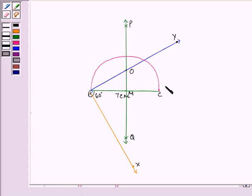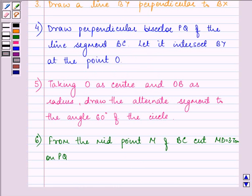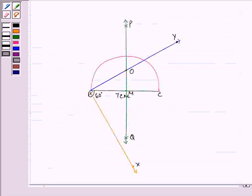Now from the midpoint M of BC, cut MN 3.7 cm on PQ. So I have written the step also and now we will be doing it. Now this is 3 cm and this point will be N.